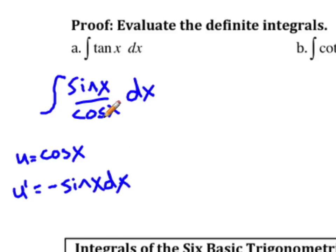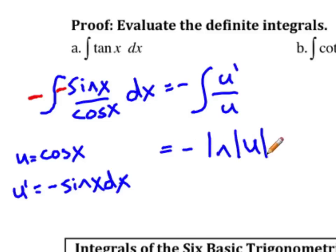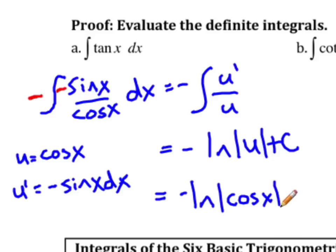We can see that we have cosine x on the bottom but we need a negative sine x dx, and right now we have a positive sine x, so what we need to do is make this negative and then to keep it balanced put a negative on the outside. Now we really have the negative integral of u' over u, and the integral of u' over u is simply natural log. So this equals negative natural log of the absolute value of u plus C, and substituting cosine x back in gives us negative natural log of the absolute value of cosine x plus C.